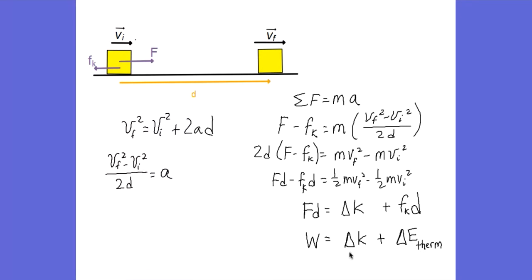So before, without friction, work done by external forces on a particle-like object results in a change in kinetic energy. Now that we include friction, work equals the change in kinetic energy and the heat generated by friction together.